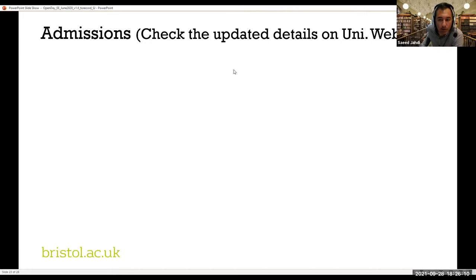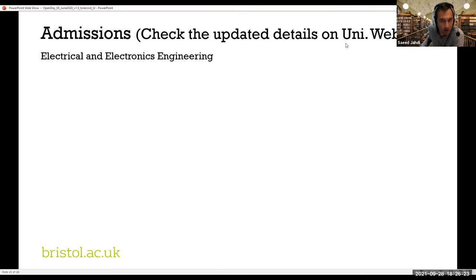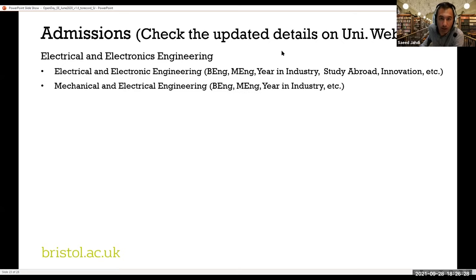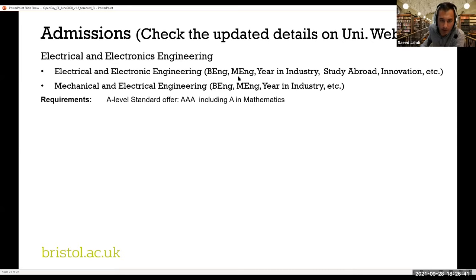A little bit on admissions and what programs we have that you can apply to. Before making your application, please check the updated details on the university's website, as they may change. In electrical and electronic engineering, we have an electrical and electronics degree which you can take as a Bachelor of Engineering over three years, or a Master's over four years. There are options to go for one year in industry as an internship placement, options to study abroad, and options to take these degrees with innovation — such as a BEng with innovation. All of these combinations are available as BEng or MEng.